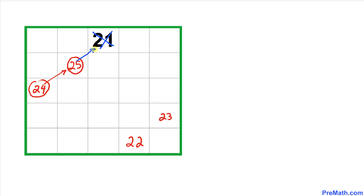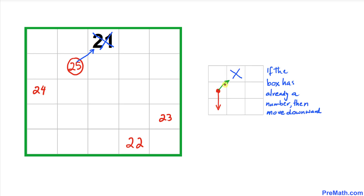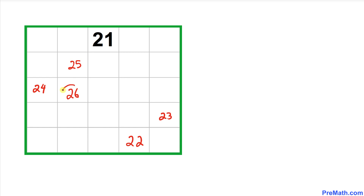Moving diagonally from 25, we find that the next cell is already occupied. Here is another rule: whenever the diagonal cell is already filled, instead of going diagonally we move downward. So the next number, 26, is placed directly below 25.